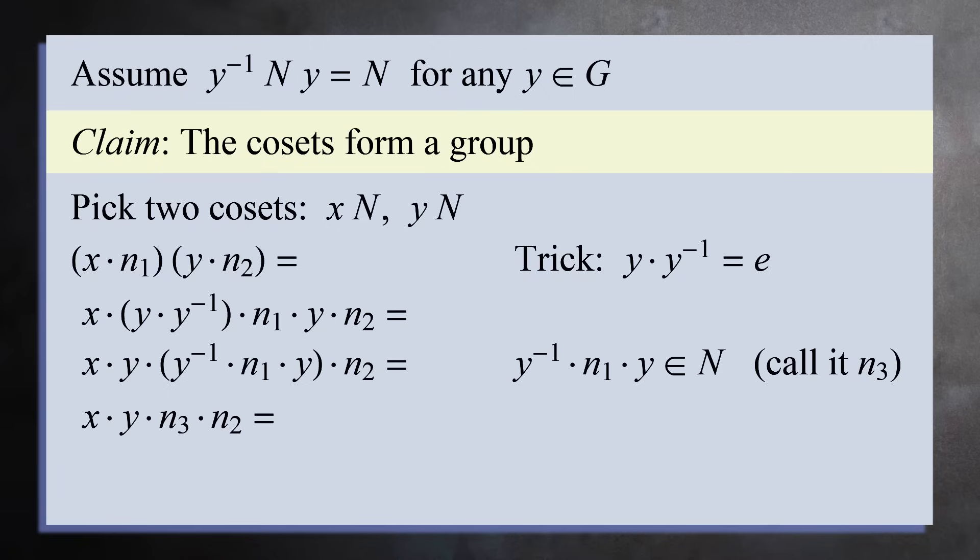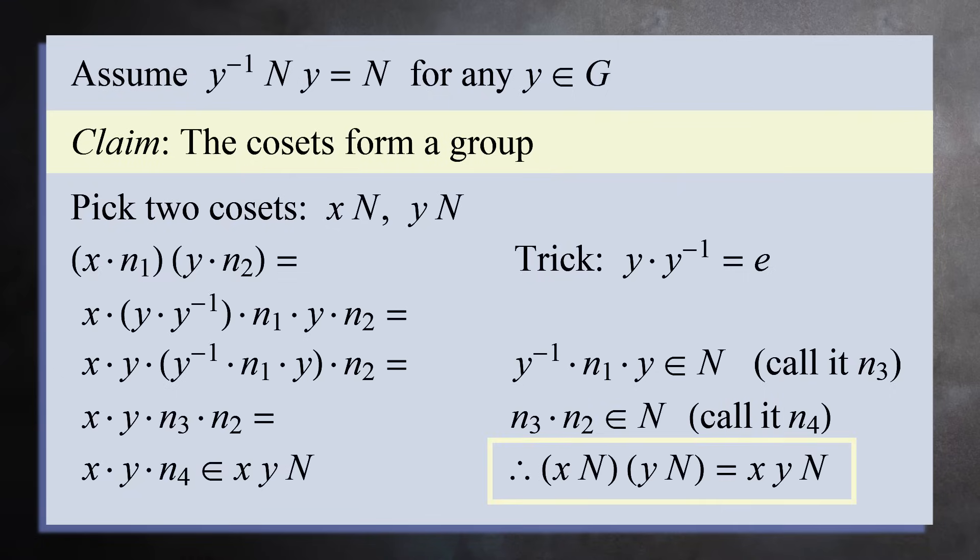So this expression equals x times y times n3 times n2. But n3 times n2 is also an N, call it n4. So the expression further simplifies to x times y times n4, which is an element of the coset xyN. This means the product of the cosets xN and yN is a coset xyN. The cosets do form a group.